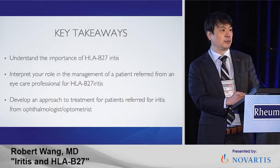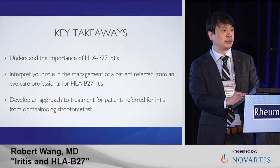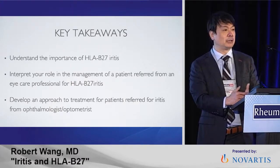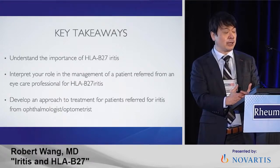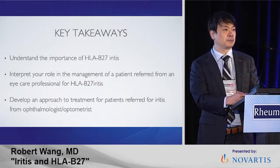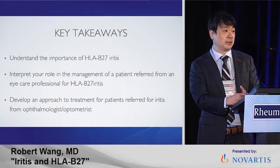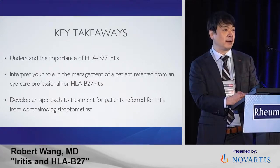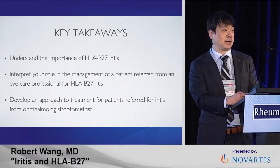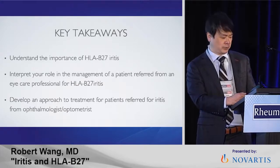To summarize key takeaways: understand the importance of HLA-B27 iritis — it comprises 50% of diseases. Interpret your role — not only the blood work, which is pretty simple, but also how you're going to approach treatment. It's very valid to say the systemics for this mild disease might be too big a hammer and topical might be better, or conversely that this person has cataracts, glaucoma, and cystoid macular edema and needs systemic treatment.